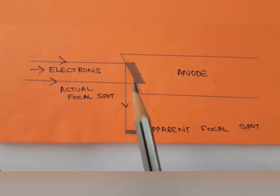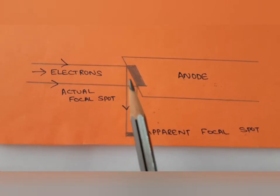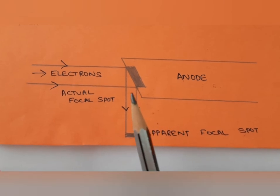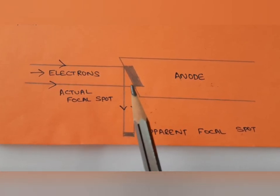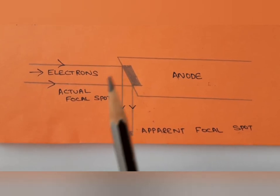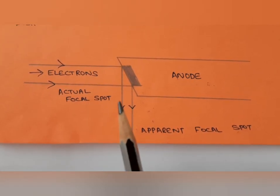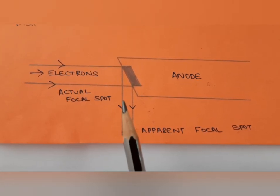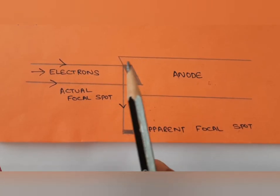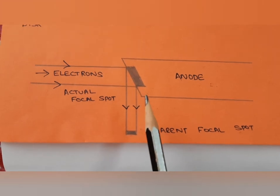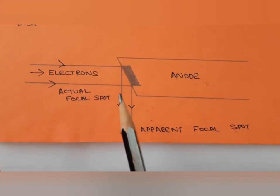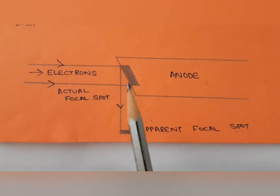Goet's line focus principle states that when we arrange the anode or target material, we give it a small angulation or tilt of about 10 to 15 degrees. In the stationary anode X-ray tube, the target material is similarly given a tilt of about 10 to 15 degrees. The importance of this angulation needs to be understood.